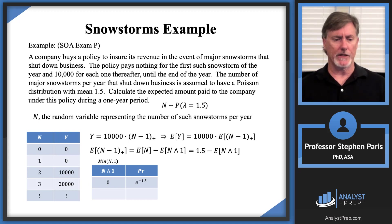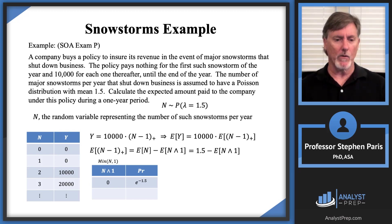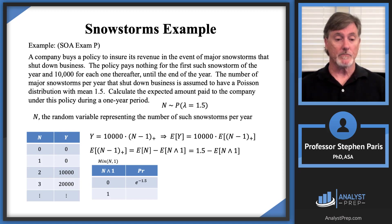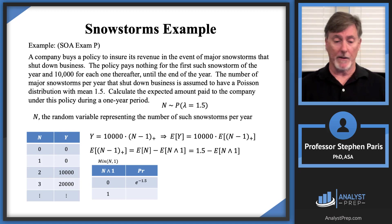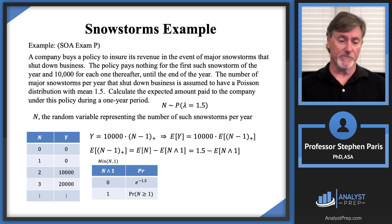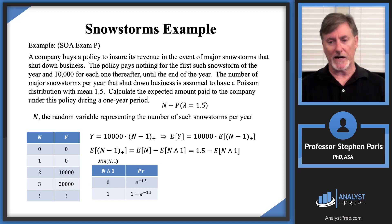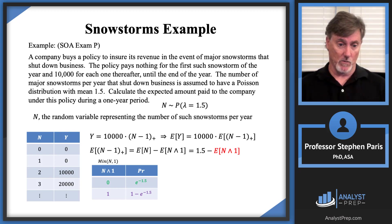For any other value of N — whether N is 1, 2, 3, or higher — the minimum of N and 1 equals 1. So the support of N∧1 is just {0, 1}. The probability that N∧1 equals 1 is therefore 1 minus e^(−1.5). The expected value of N∧1 is then 0 times e^(−1.5) plus 1 times (1 − e^(−1.5)), which equals 1 − e^(−1.5).